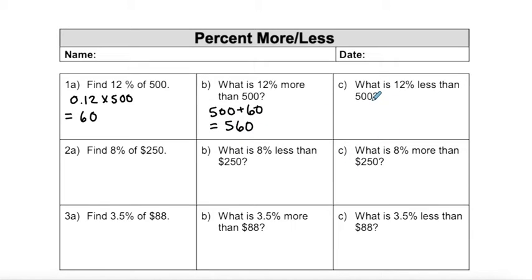And in order to find what 12% less than 500 is, I'm going to take my 12% that I figured out already and this time subtract it from 60 to give me 440.